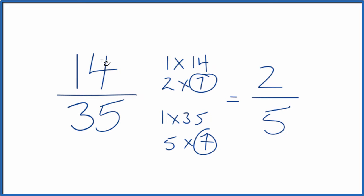So the fraction 14 35ths is equal to 2 5ths. They're equivalent. They have the same value, just that we've reduced 14 35ths down to 2 5ths in simplest terms.